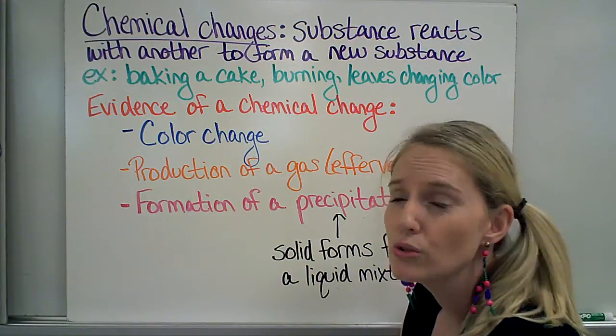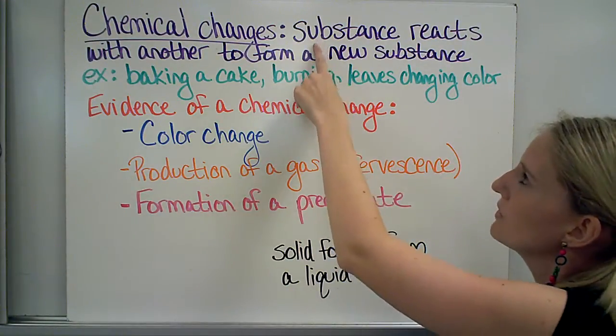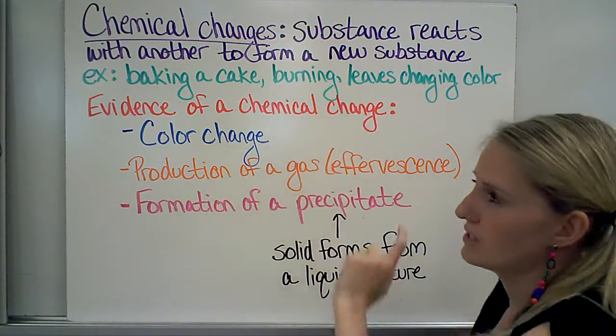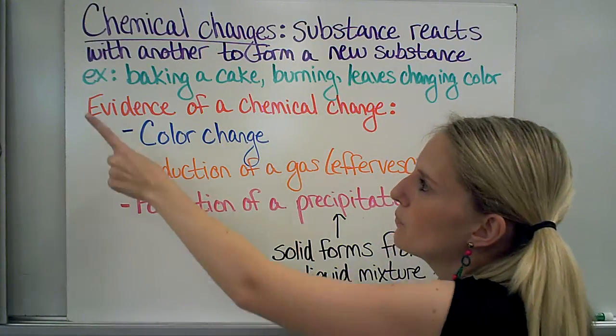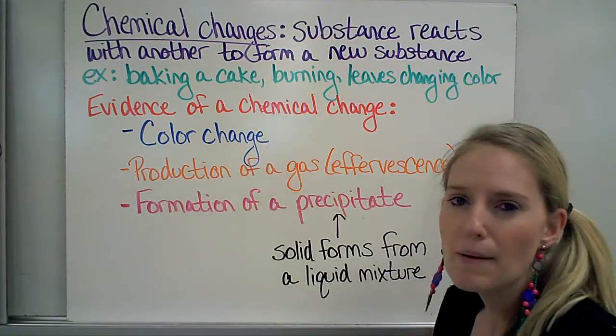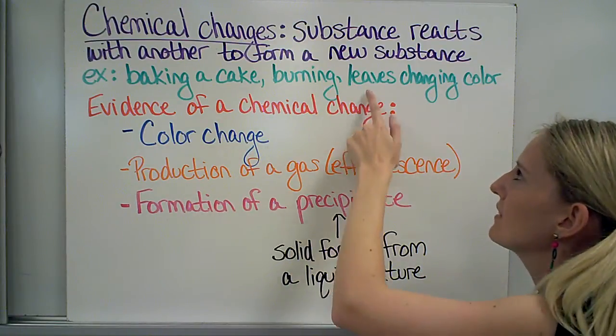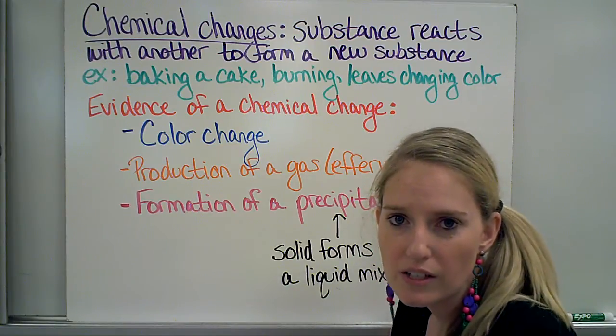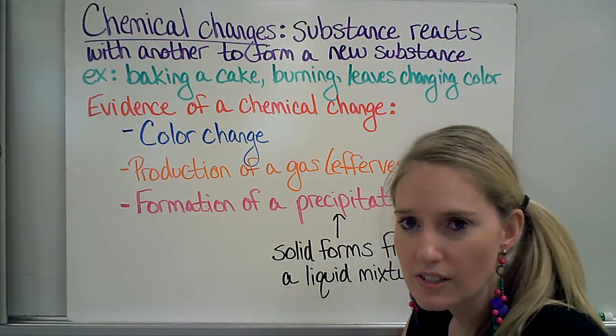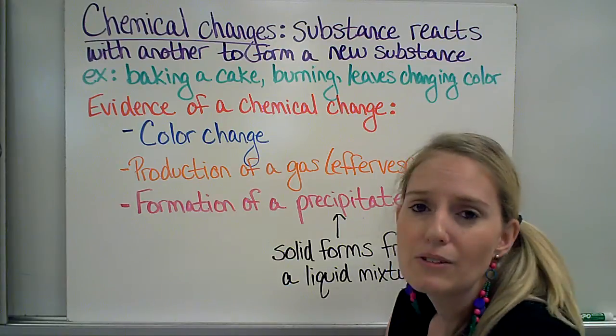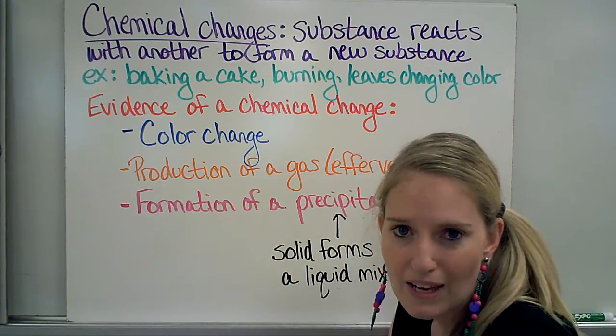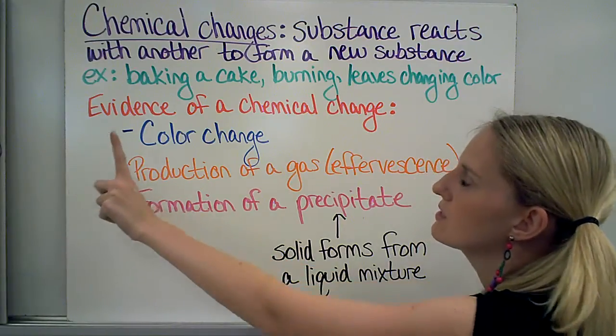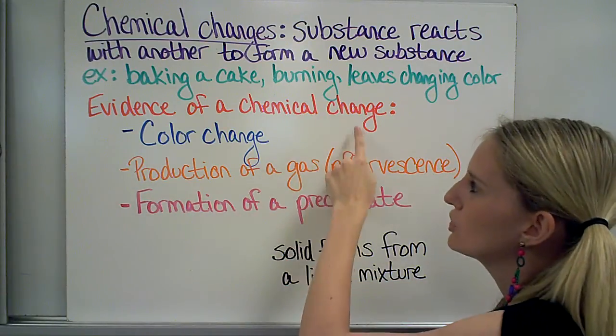Chemical changes do change the composition, so the substance is going to react with another to form a new substance that wasn't there before. So when I bake a cake, or any time I burn something, or when the leaves are changing color in the fall, those are all chemical changes because I've created a new substance that's not there before. Now sometimes it's hard to tell if you've made a new substance or not, so we have three pieces of evidence that we use to tell if a chemical change has happened.